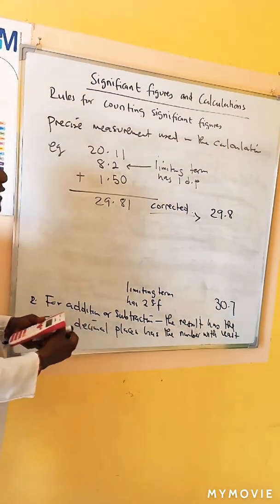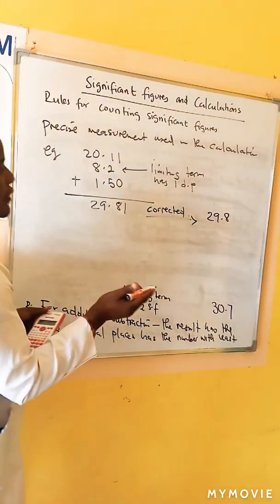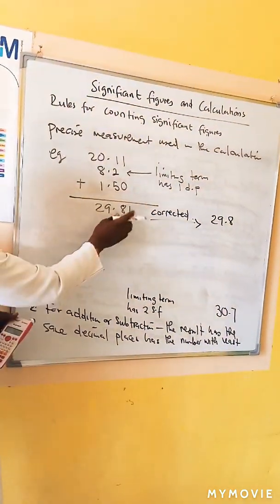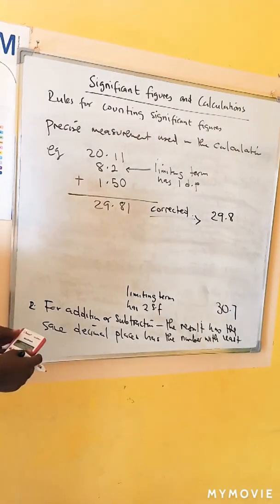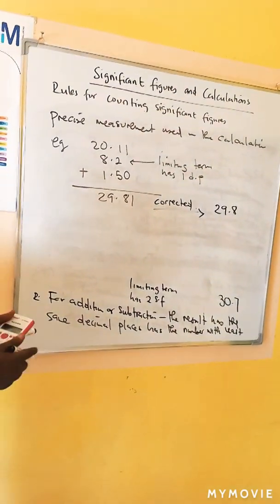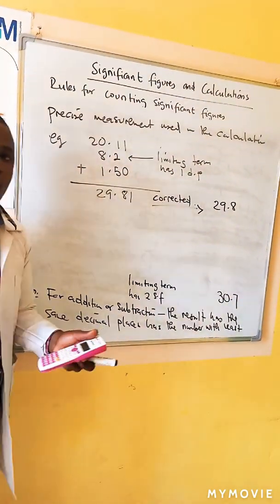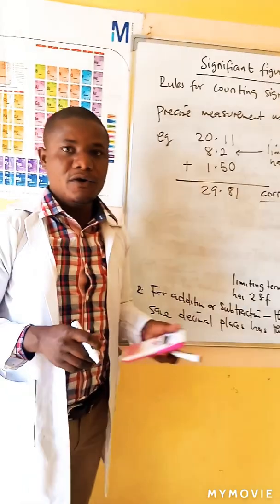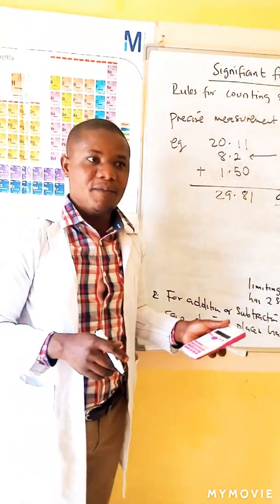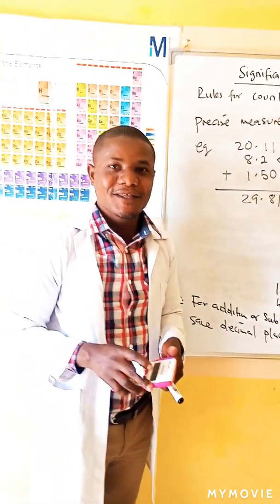When rounding: if the digit to be removed is less than five, the preceding digit stays the same; if it is more than five, the preceding digit increases by one. In the next tutorial we'll look at dimensional analysis. Thanks for watching.